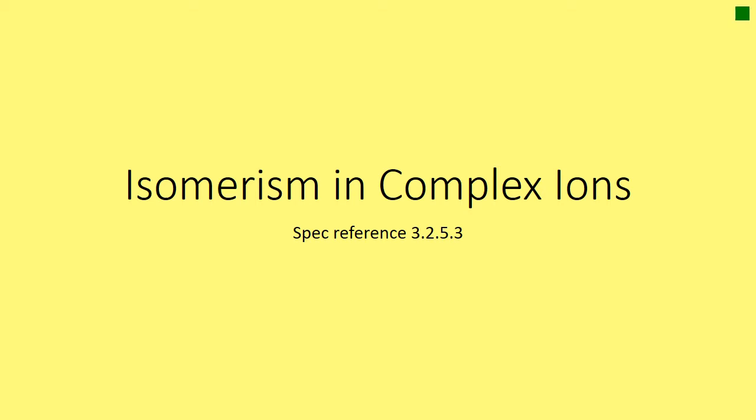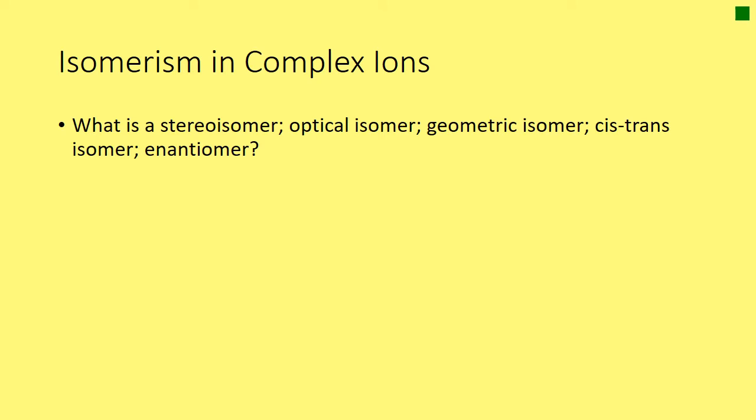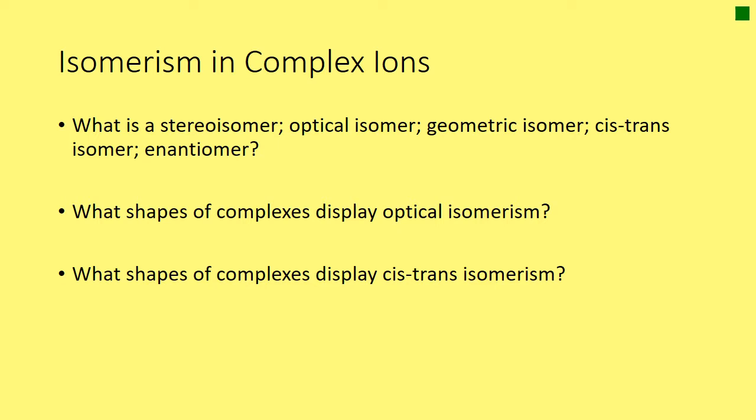Hello and welcome to this new video lesson on isomerism in complex ions, spec reference 3.2.5.3. Our lesson objectives are: to know what is a stereoisomer, what is an optical isomer, what is a geometric isomer, and what are cis-trans isomers and enantiomers. We'll also cover the shapes of complexes that display optical isomerism or cis-trans isomerism, and lastly, what is cisplatin.